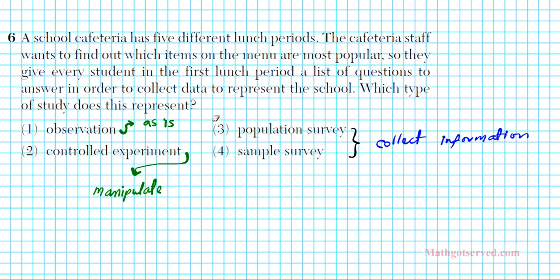Now which of them is applicable to this situation? If you read the problem you notice that every student in the first lunch period is given a list of questions to answer. If you are giving students a list of questions to answer, you are collecting data — that qualifies as a survey. The question is: is this a population survey or a sample survey? It was only the first lunch period students that were surveyed, but they wanted to get an idea of where the whole school stood. So we are using just the first period to represent the entire school — that is an example of a sample survey.